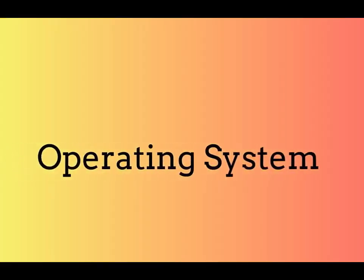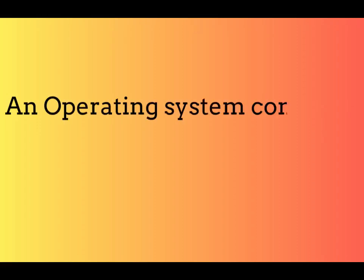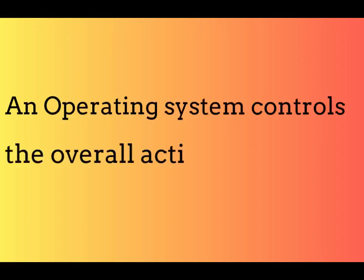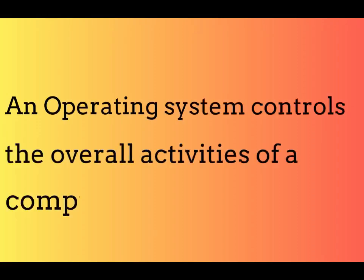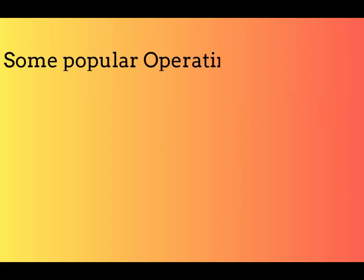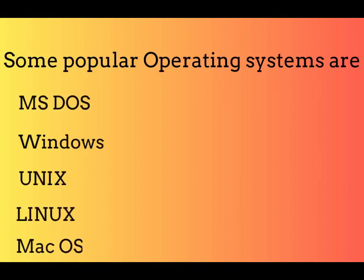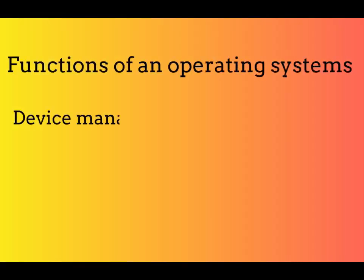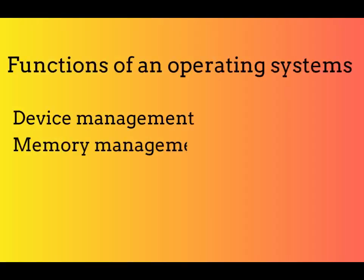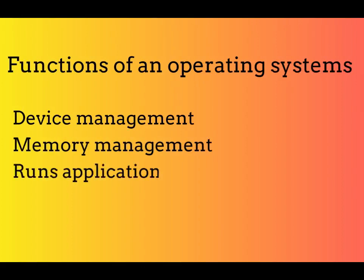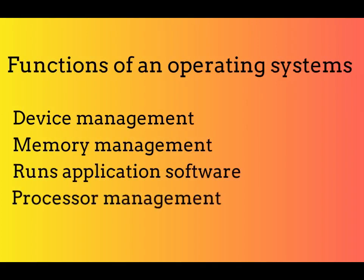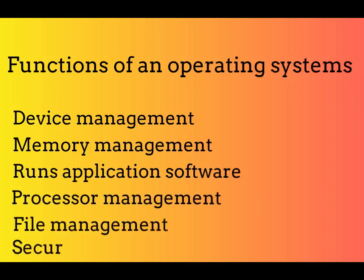An operating system controls the overall activities of a computer. Some popular operating systems are MS-DOS, Windows, Unix, Linux, and Mac OS. Functions of an operating system include device management, memory management, running application software, processor management, file management, and security.